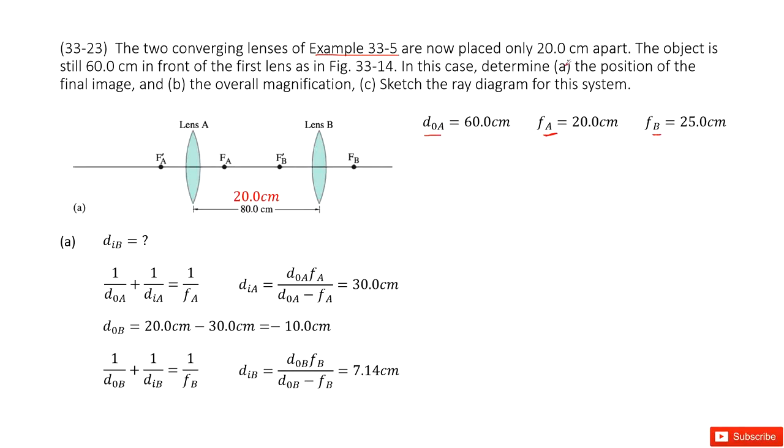So first part, we need to know d_IB, the position for the final image. That means the image for lens B. For these two lens problems, we must remember the image for first lens is the object for second lens. So we must find the image distance for lens A.